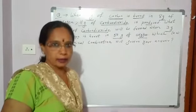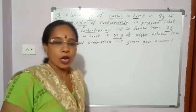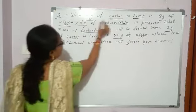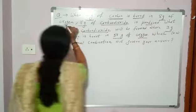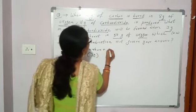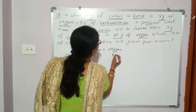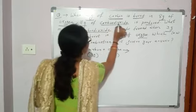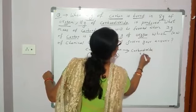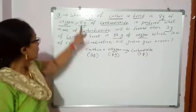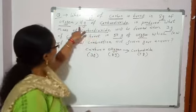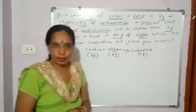Now one more numerical based on the law of chemical combination. The question here is: when 3 gram of carbon is burnt in 8 gram of oxygen, 11 gram of carbon dioxide is produced. This is given in the question.